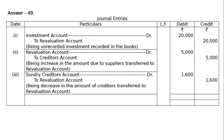The liability was reduced — either it was paid or reduced due to some reason — and hence it is credited to the revaluation account. The journal is to be totaled at the end, showing Rs 26,600 in each column, both debit and credit.